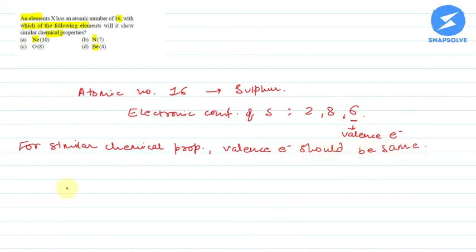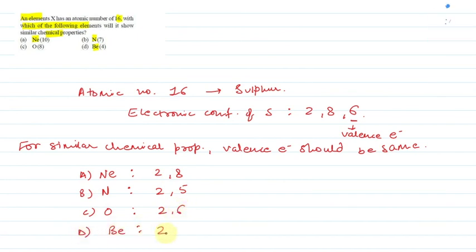First of all, we will see all the electronic configurations. Neon atomic number 10 will be 2,8. Nitrogen atomic number 7 will be 2,5. Oxygen atomic number 8 is 2,6. Beryllium atomic number 4 is 2,2.